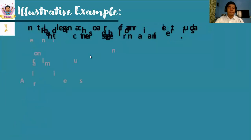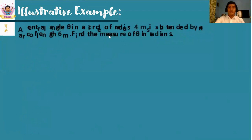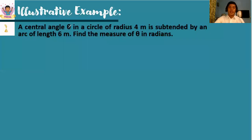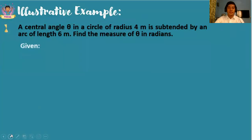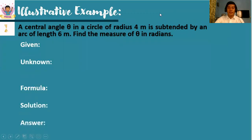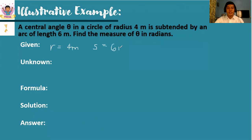Let's have another problem. This time, we are looking for the measure of the central angle. A central angle theta in a circle of radius r equal to 4 meters is subtended by an arc of length 6 meters. We need to find the measure of theta in radians. Following the GUPSA format — given, unknown, formula, solution, and answer — for our given, we have the radius which is 4 meters, and s which is 6 meters. For the unknown value, we have theta in radian measure.